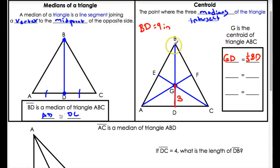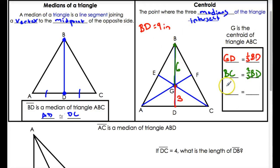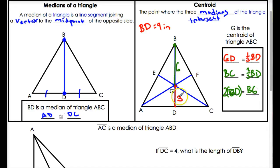The second fact is the point from the vertex to the centroid — the bigger piece, BG — is two thirds of the total median. So BG equals two thirds of BD. If the whole thing is nine, this would be six. Two thirds, one third — they add up to nine. And finally, DG is half of BG, or two times the smaller segment equals the larger segment. Two times DG equals BG. Two times three is six. So two times the smaller segment is always equal to the bigger segment.